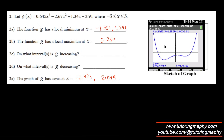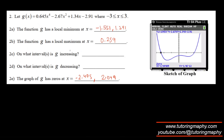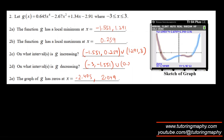With all critical values found, the increasing intervals are from the first minima to the maxima: negative 1.551 to 0.259, union the second minima to the right edge: 1.291 to 3. The decreasing intervals are negative 3 to negative 1.551, union 0.259 to 1.291.